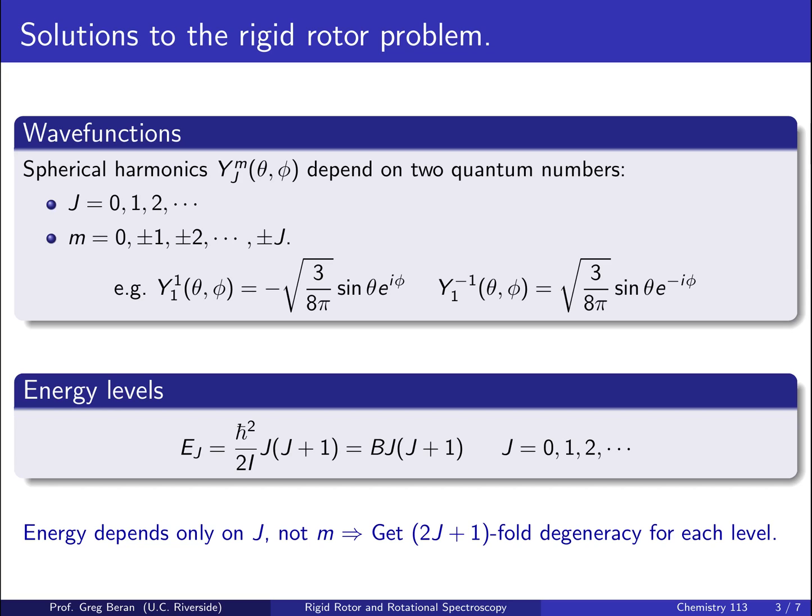The functions have various forms, but I've shown two example ones here for the Y_1^1 and Y_1^-1 functions. You can see they involve normalization constants in front. In this case, it's a sine theta, and then an e to the i phi or negative i phi, depending on whether m is 1 or negative 1.